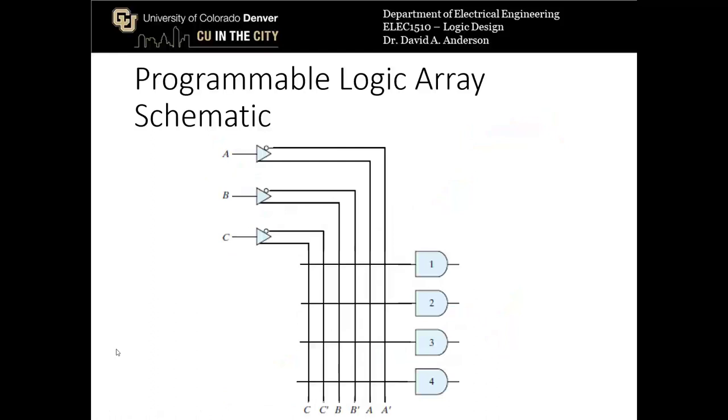So let's first analyze the very first chunk of the programmable logic array schematic. This is where we take the input variables and input them into the special buffers that produce A prime, A, B prime, B, and C prime, and C, as you can see. Now those are also given down here at the bottom because the wires are just connected there.